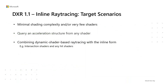Inline ray tracing can be useful for many reasons. Perhaps the developer knows the scenario is simple enough that the overhead of dynamic shader scheduling is not worthwhile — for example, a well-constrained way of calculating shadows. It could also be convenient and efficient to query an acceleration structure from a shader that doesn't support dynamic shader-based rays, like a compute shader. It might also be helpful to combine dynamic shader-based ray tracing with the inline form. Some ray tracing shader stages, like intersection shaders and any-hit shaders, don't even support tracing rays via dynamic shader-based ray tracing, but the inline form is available everywhere.